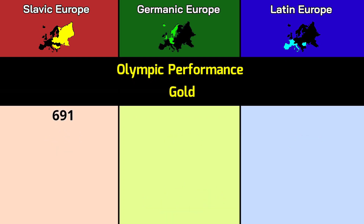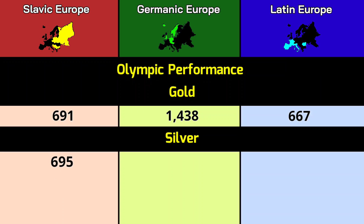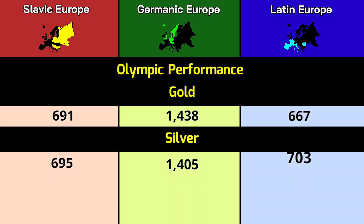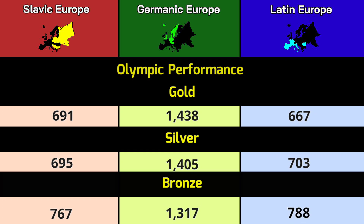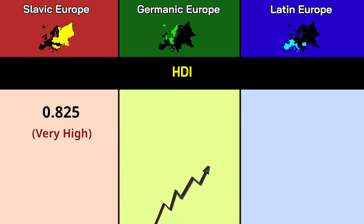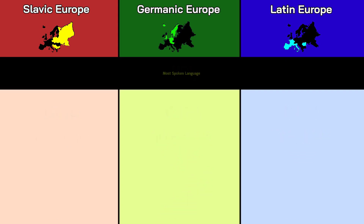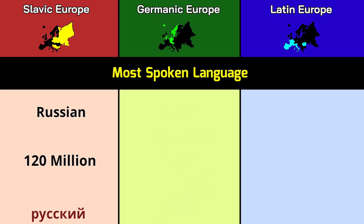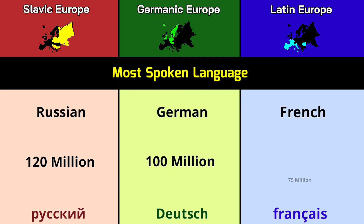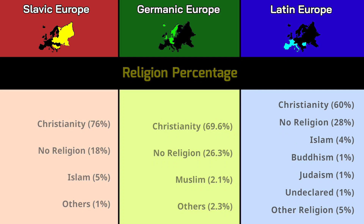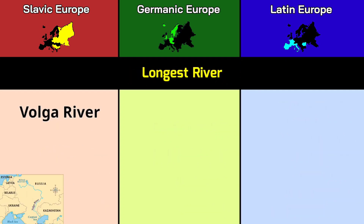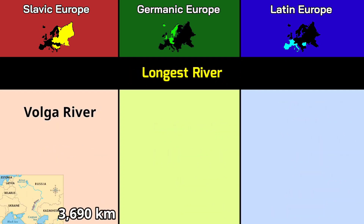Olympic performance — total Olympic medals: 2,153, 4,160, 2,158. Gold: 691, 1,438, 667. Silver: 695, 1,405, 703. Bronze: 767, 1,317, 788. HDI: 0.825, 0.924, 0.911. Most spoken language: Russian 120 million, German 100 million, French 75 million. Religion: Christianity dominates all regions.